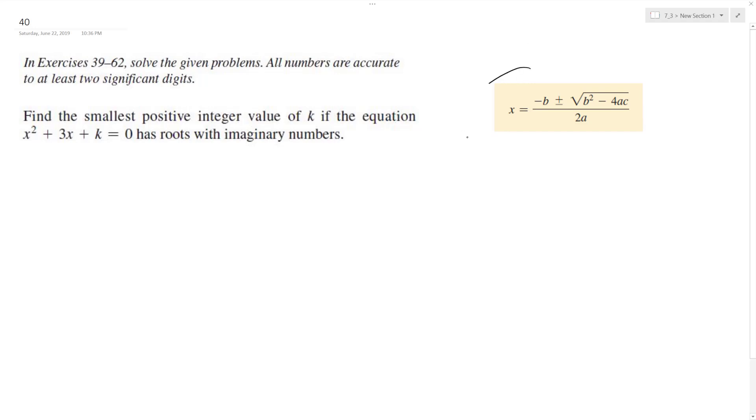And so we're going to use the quadratic formula. Basically all we want to do is, we have a, b, c. We want to do this so what's under the discriminant here is a negative value.